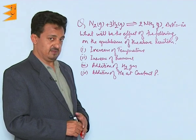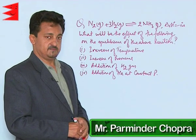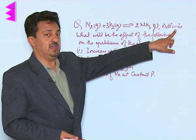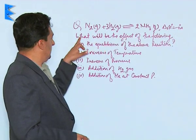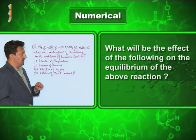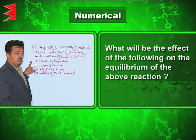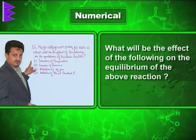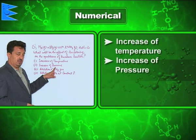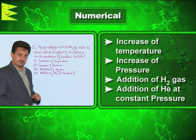Let us do a problem on Le Chatelier's principle. The reaction given is: nitrogen reacts with three moles of hydrogen to form two moles of ammonia, with a negative enthalpy sign showing the forward reaction is exothermic. The question asks: what will be the effect on the equilibrium of this reaction for the following four changes — increase of temperature, increase of pressure, addition of hydrogen gas, and addition of helium at constant pressure?